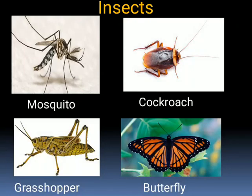Insects are very small animals. They have six legs and sometimes wings to fly. For example, mosquito, cockroach, grasshopper, butterfly, etc.